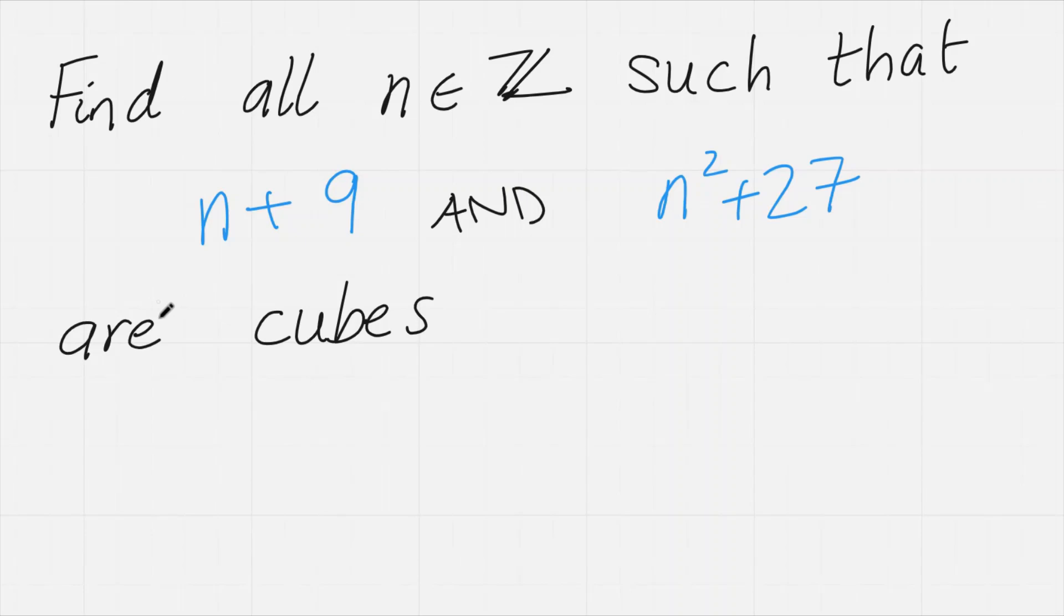Hi, thanks for joining me. Today I've got a really cool number theory problem. We want to find all integers n such that n plus 9 and n squared plus 27 are both cubes.